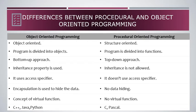These are the differences between object-oriented programming and procedural-oriented programming. Object-oriented programming is object-oriented, whereas procedural-oriented programming is structure-oriented. Object-oriented means the program focuses on objects rather than functions. Structure-oriented means the program focuses on data structures or subroutines. In OOP we divide our program into objects, while in procedural we divide it into functions.